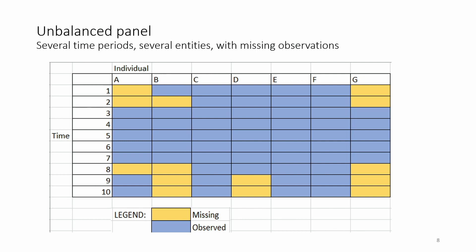If, however, there are missing observations in the data, we speak of an unbalanced panel, as shown here.